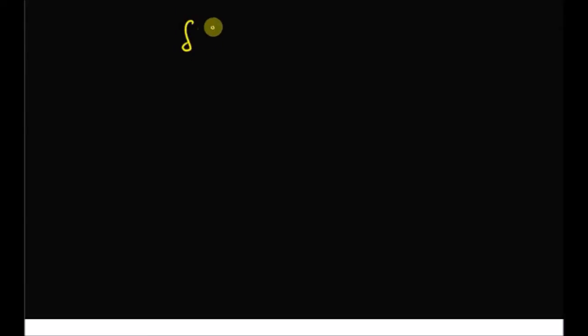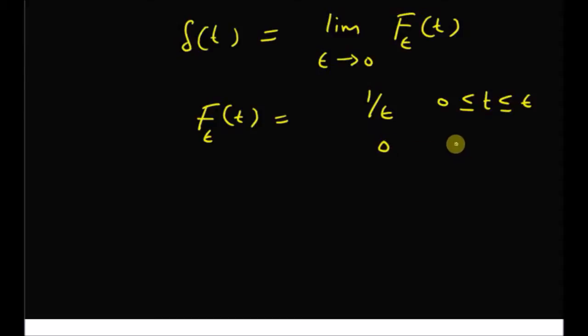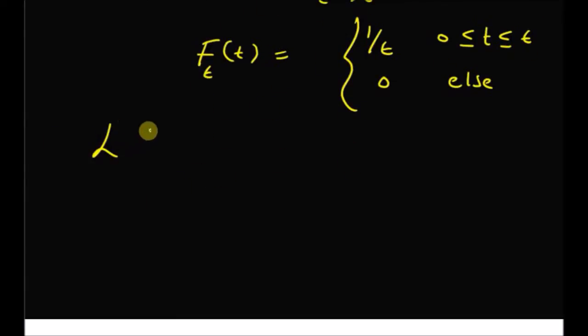Hello, welcome. In this short video, let us look at the Laplace transform of the delta function — that is the impulse function — where this impulse function is defined as a limiting case of the rectangular pulse function. The impulse function delta of t is defined as limit epsilon tends to 0 of f_epsilon of t, where f_epsilon of t is equal to 1 over epsilon for values of t between 0 and epsilon, and 0 elsewhere.